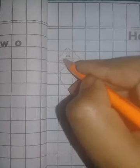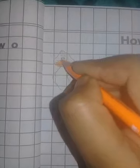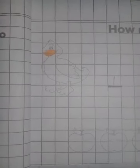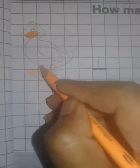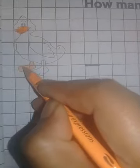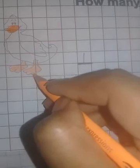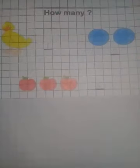So after writing the numbers, I will color these pictures. So I will take orange color and I will color the duck's beak. Peach color here. And yellow color for its body. I have colored the pictures.